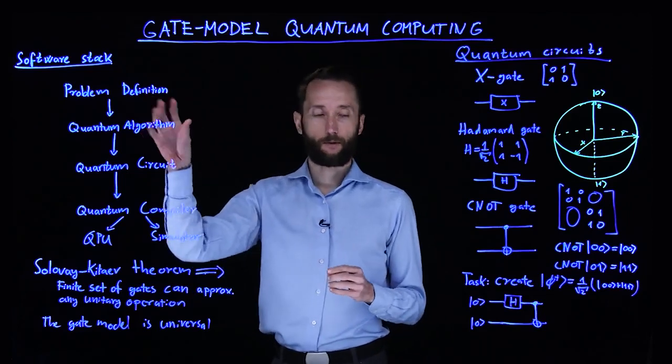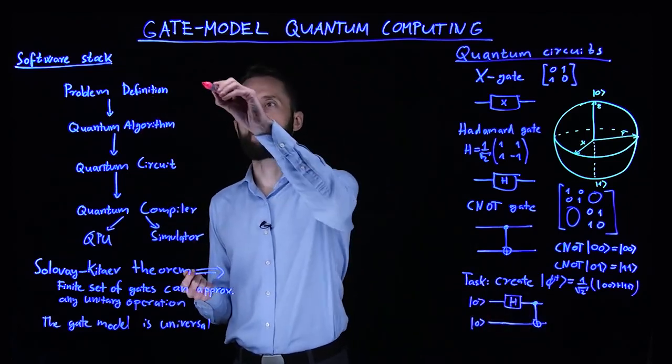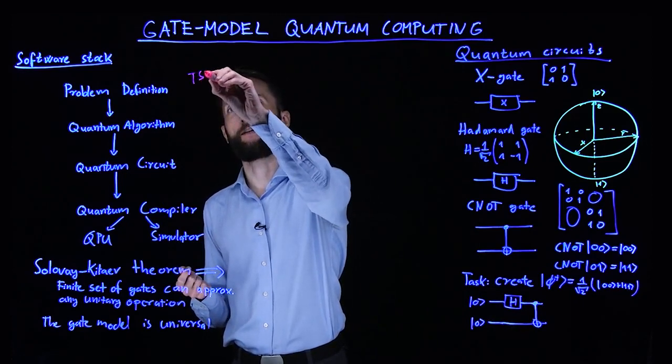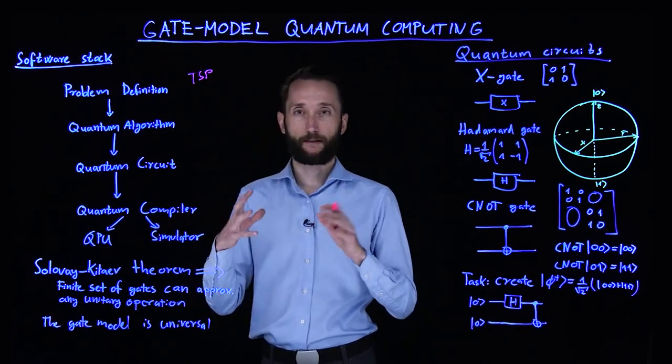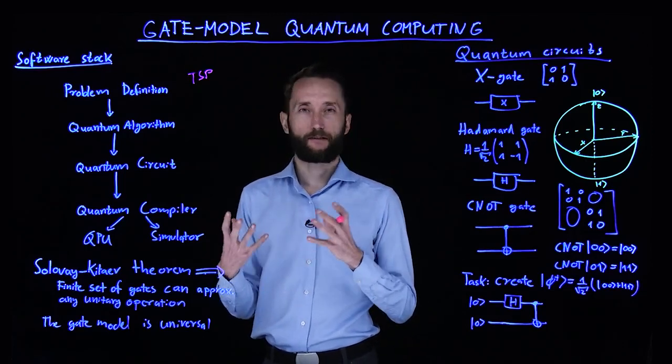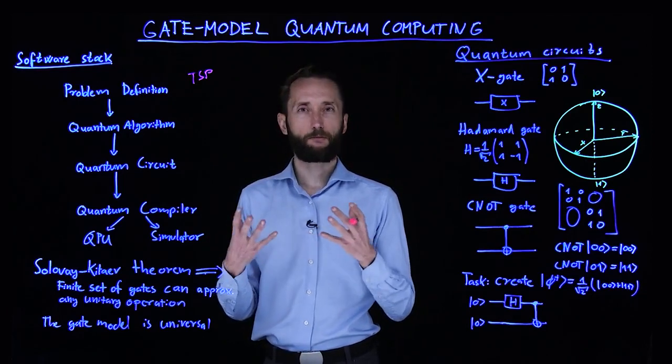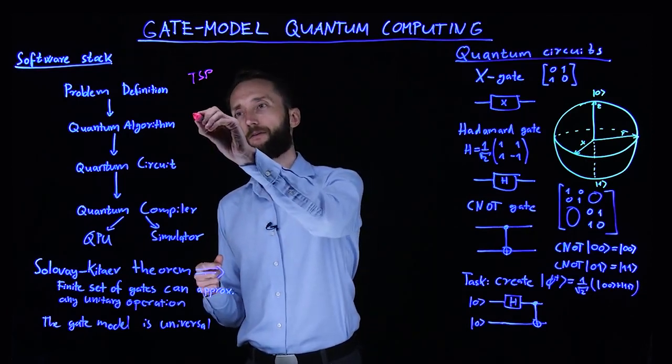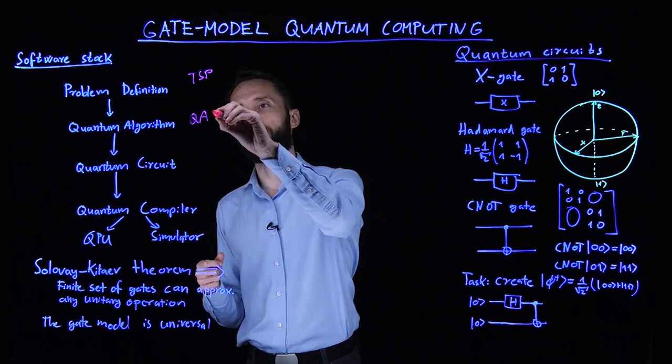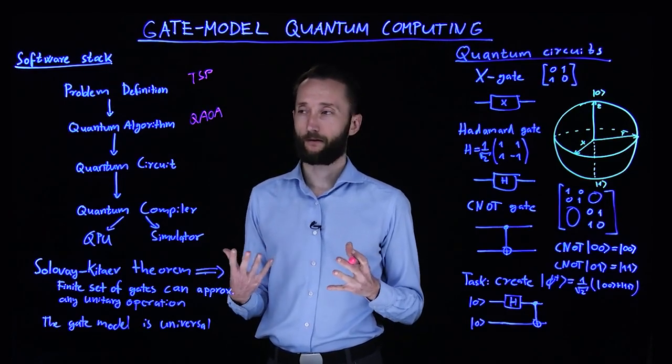Imagine that you have your problem definition. For instance, you want to solve the traveling salesman problem, that is you want to find the shortest way of visiting n cities. And then you can think about what is a matching quantum algorithm. Then you're looking into some optimization algorithm, for instance, an algorithm that we are going to look into, which is called QAOA, quantum approximate optimization algorithm.